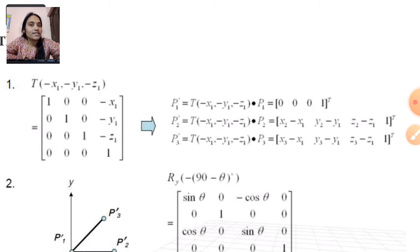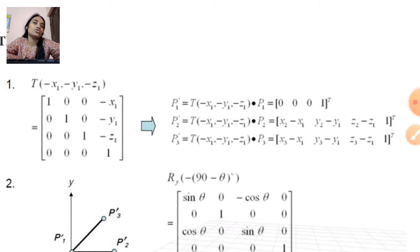First we translate it — that means translate in reverse form: minus X1, minus Y1, minus Z1. The matrix form is: [1, 0, 0, -X1; 0, 1, 0, -Y1; 0, 0, 1, -Z1; 0, 0, 0, 1]. This matrix form is written in equation form.